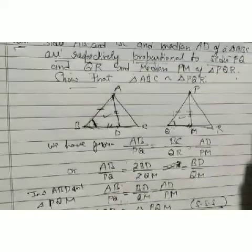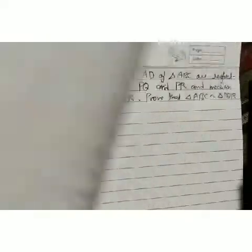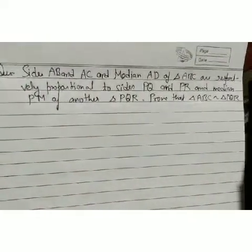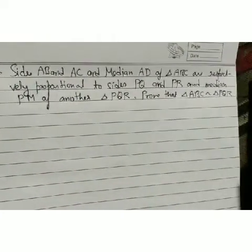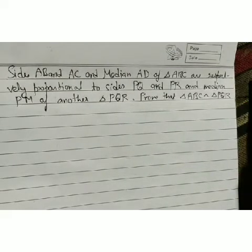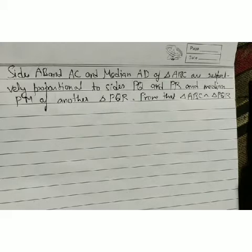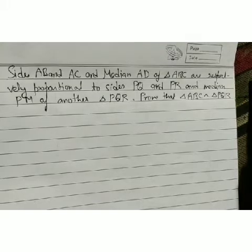Now we move to the next NCERT problem. Sides AB and AC and median AD of triangle ABC are respectively proportional to sides PQ and PR and median PM of triangle PQR. Prove that triangle ABC is similar to triangle PQR.